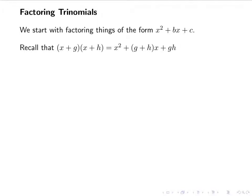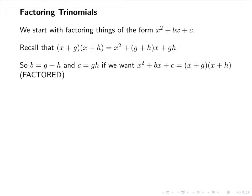We're going to recall from FOILing that x plus g times x plus h equals x squared plus g plus h times x plus gh. So if I FOIL it out and combine my x terms in the middle, I get this. So b here is g plus h, and c is g times h.